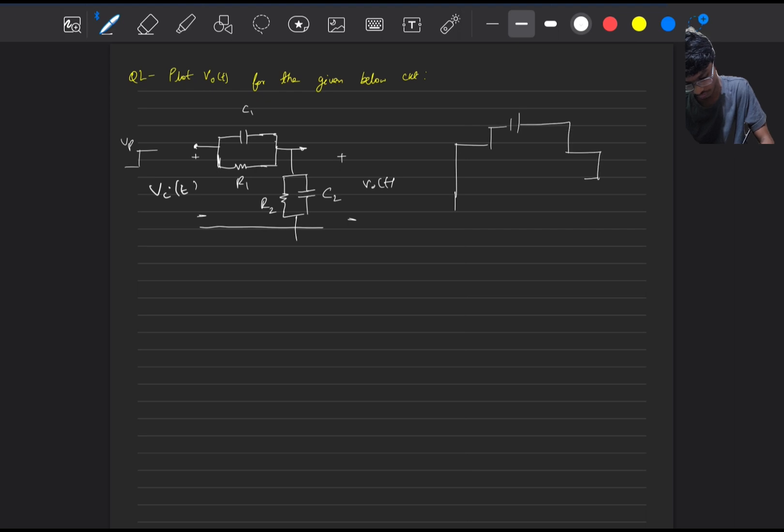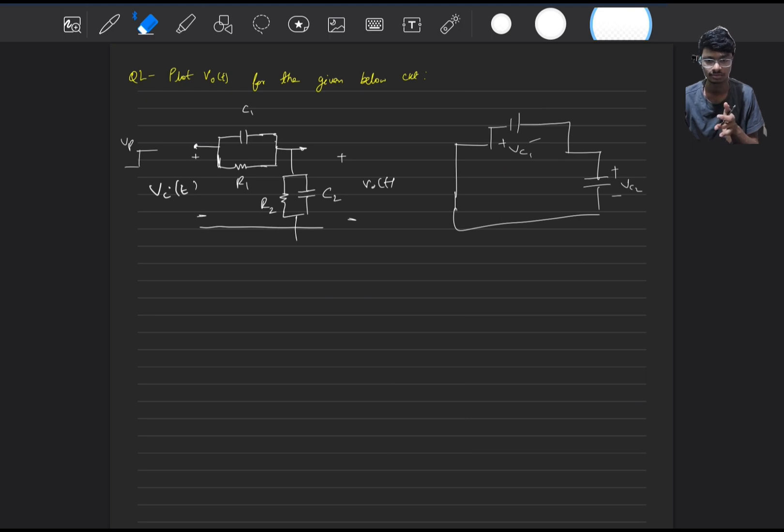Now if we check the voltage of the caps, this is VC2 and this is VC1. The voltage across them are dependent on each other. So we will have only one energy storing element which is independent. So we will have only one time constant.